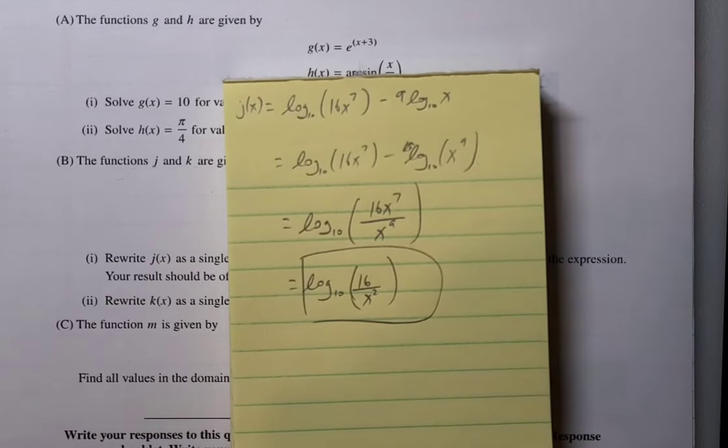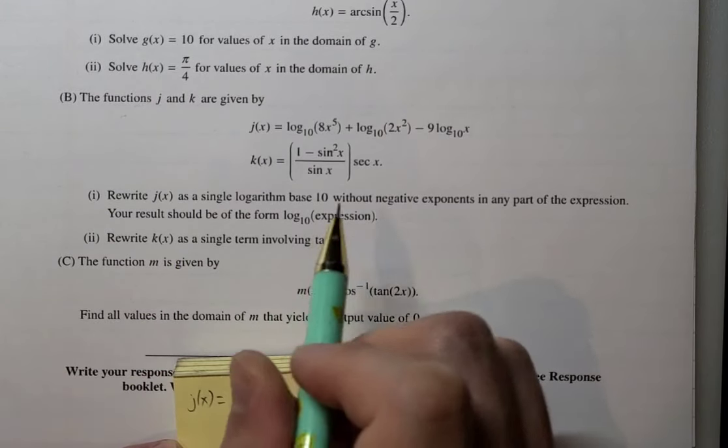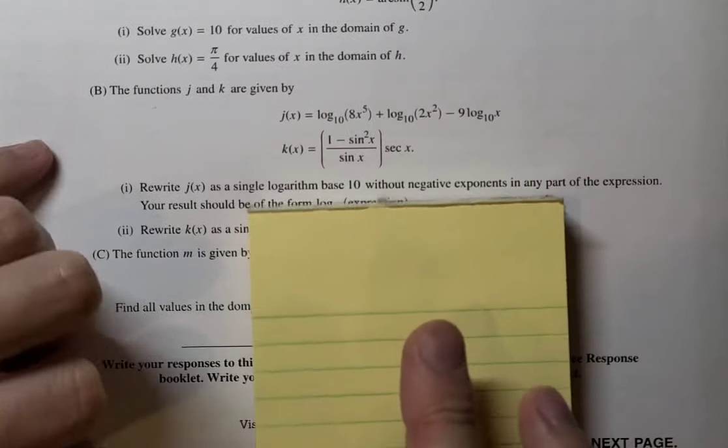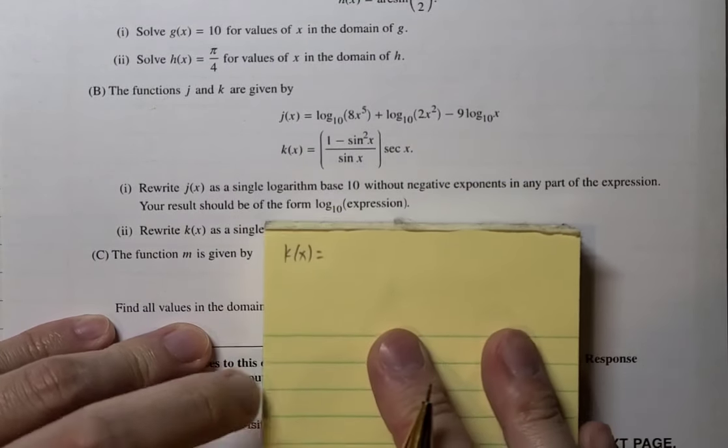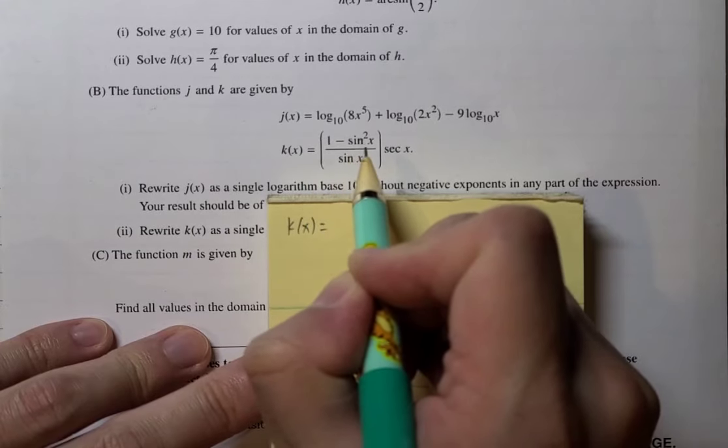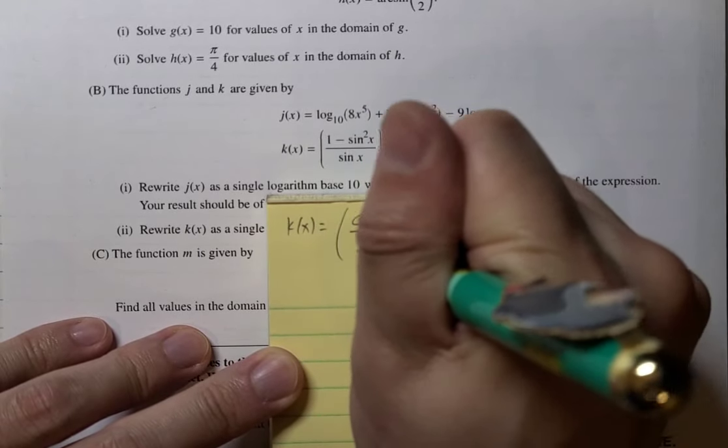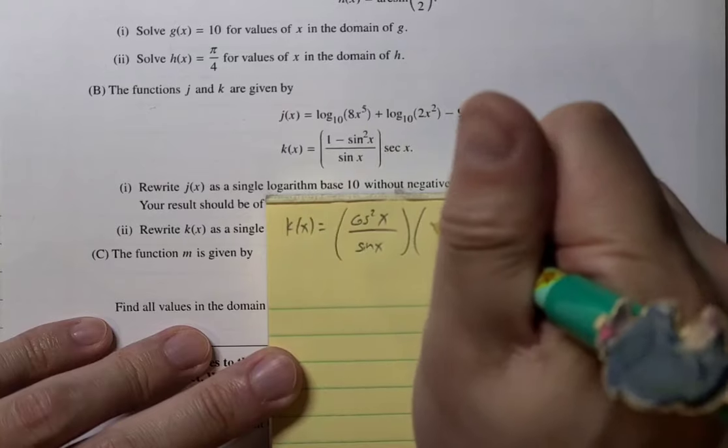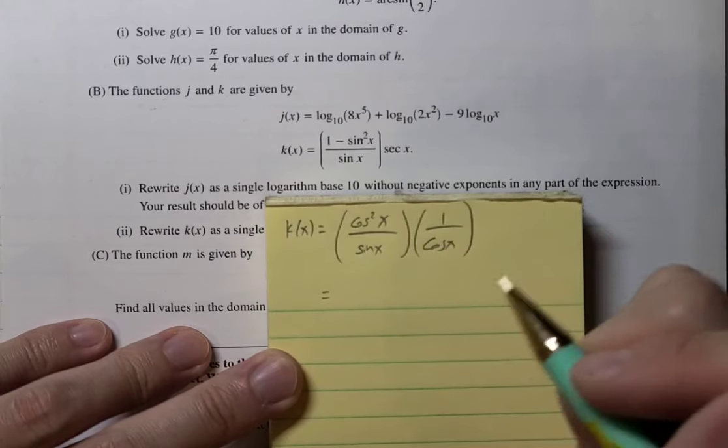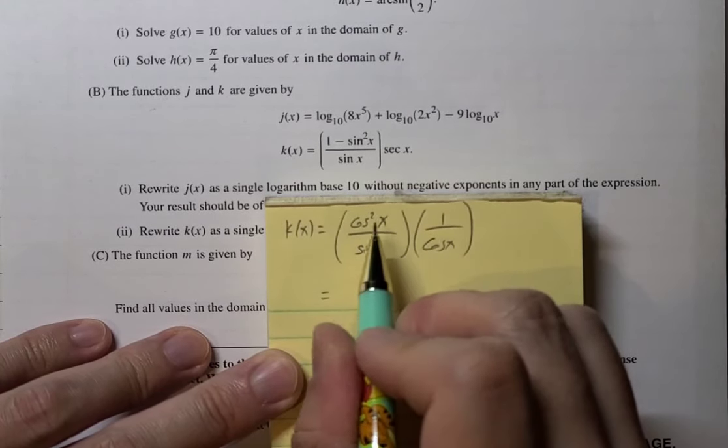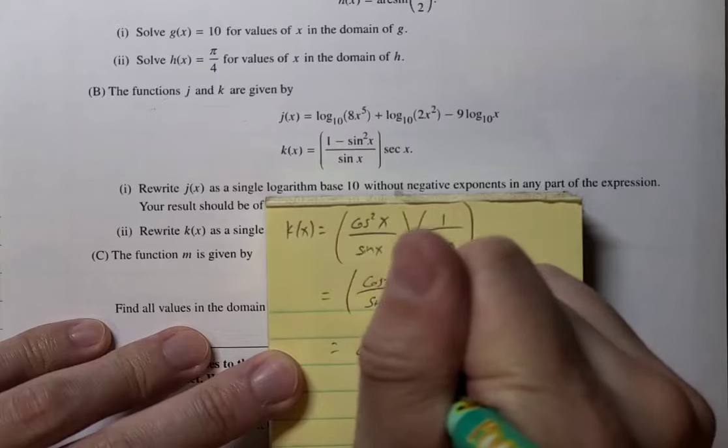If you've done a lot of these, these are a piece of cake, honestly. Next. You write k as a single term involving tangent. Let's try that. So k of x. First of all, I see that a single term involving tangent. So first of all, I see that 1 minus sine squared. I can write this as cosine squared, because of the Pythagorean identity, over sine x. And then secant, I can write as 1 over cosine x. So what happens now? Well, 1 power of cosine can cancel from the top. So I get cosine x over sine x. This is cotangent x.